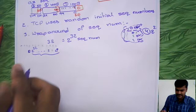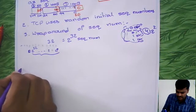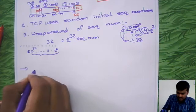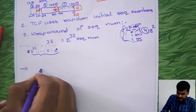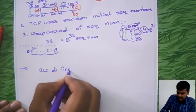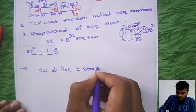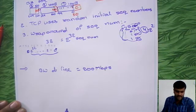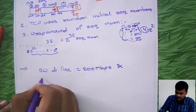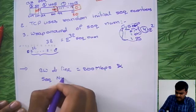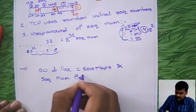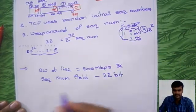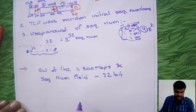So here let us see one numerical problem to understand what actually the wraparound sequence is. Consider bandwidth of line is 200 Mbps. Given bandwidth of line is 200 Mbps and sequence number field consists of 32 bit. Same like here, it's TCP so 32 bit long sequence number we are using.